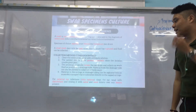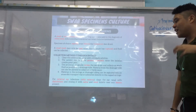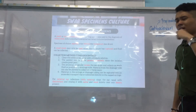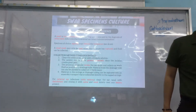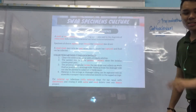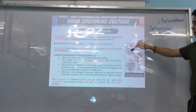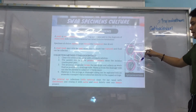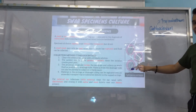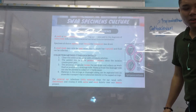For external ear infections — otitis externa — clean the ear canal with disinfectant, rinse with saline, and then briskly swab the area. Here is an image of tympanocentesis: the fluid is behind the eardrum, and after incision, a tube is inserted and the fluid is aspirated from behind the eardrum.